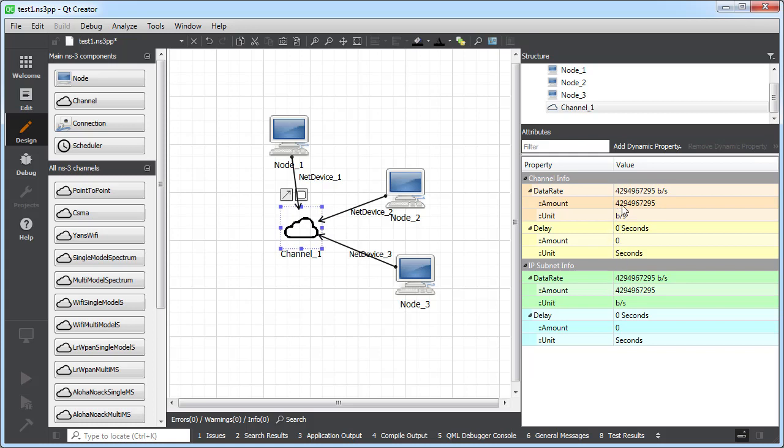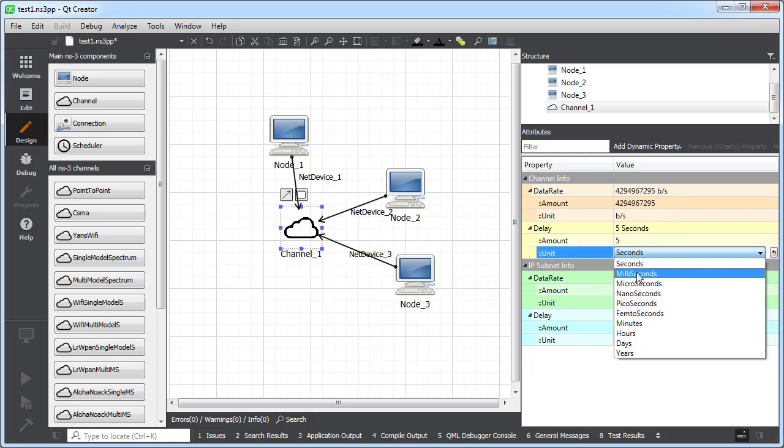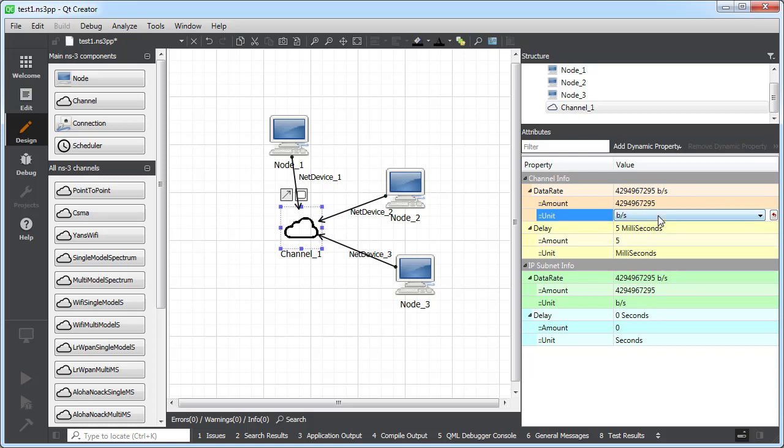If I select the channel, I can also set the different attributes. This is a CSMA channel, so I'm allowed to set the data rate and the delay. I can set for the delay the value: 5, 10, I can set seconds or, for example, picoseconds or milliseconds. And so on. Those are options from the JSON configuration file. Same thing for the data rate. I can set bit per second, kilobit per second, megabit per second, and so on.